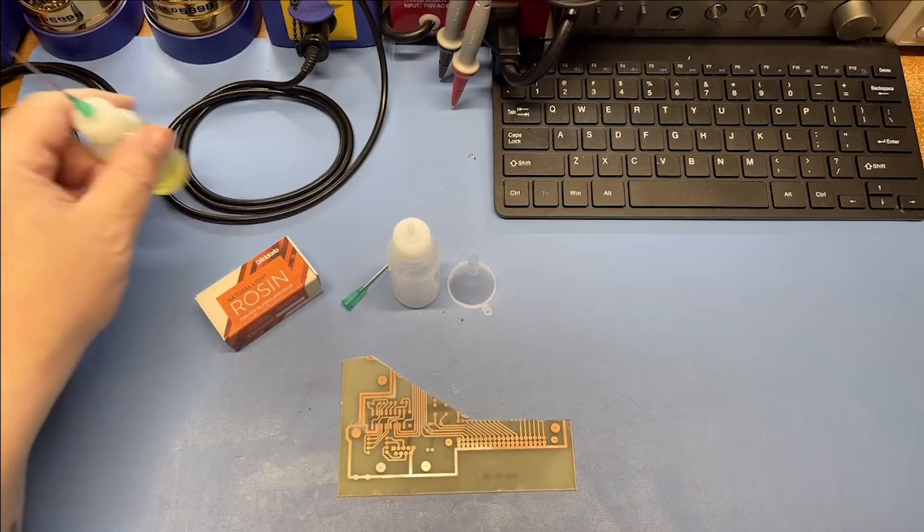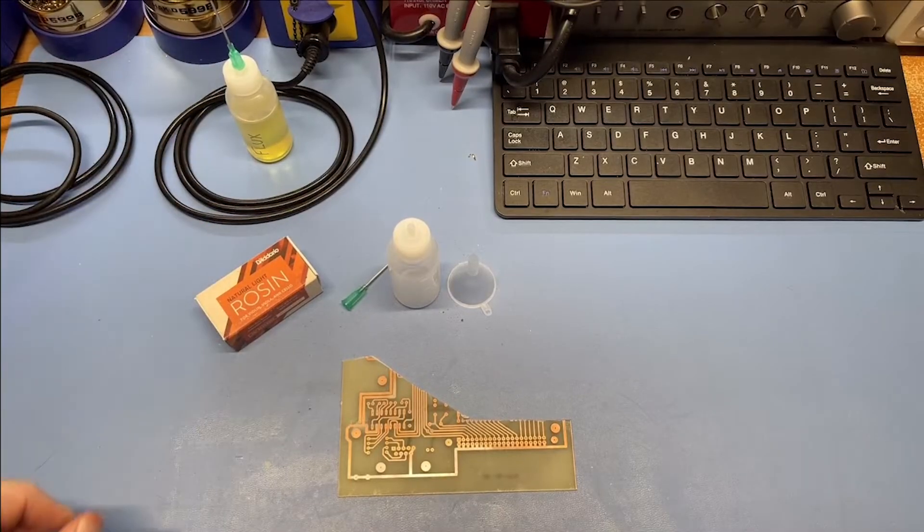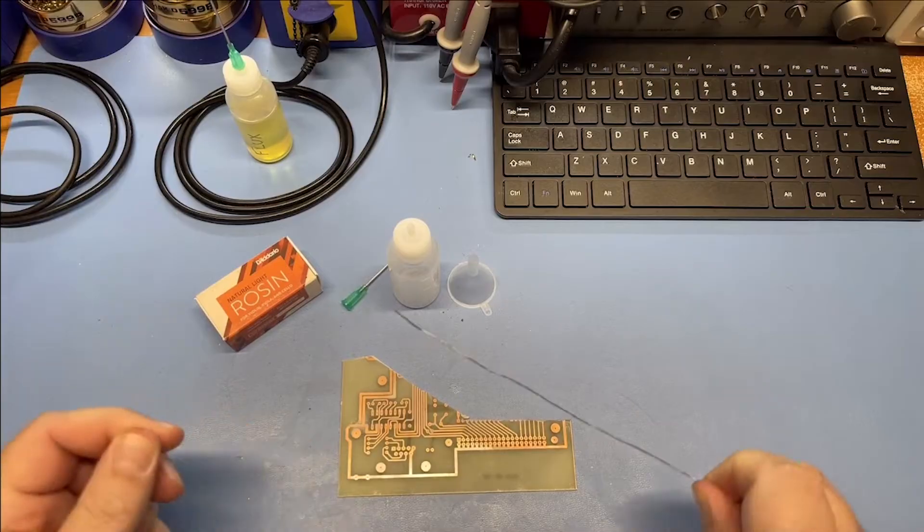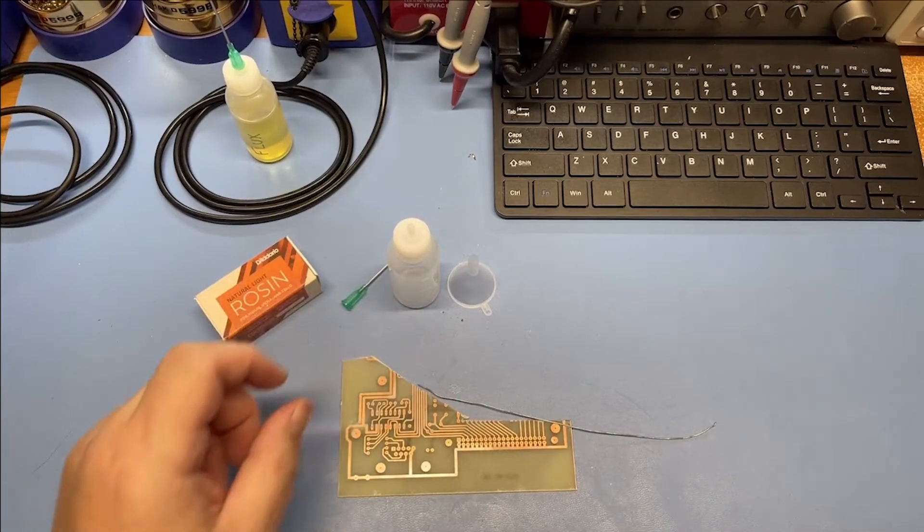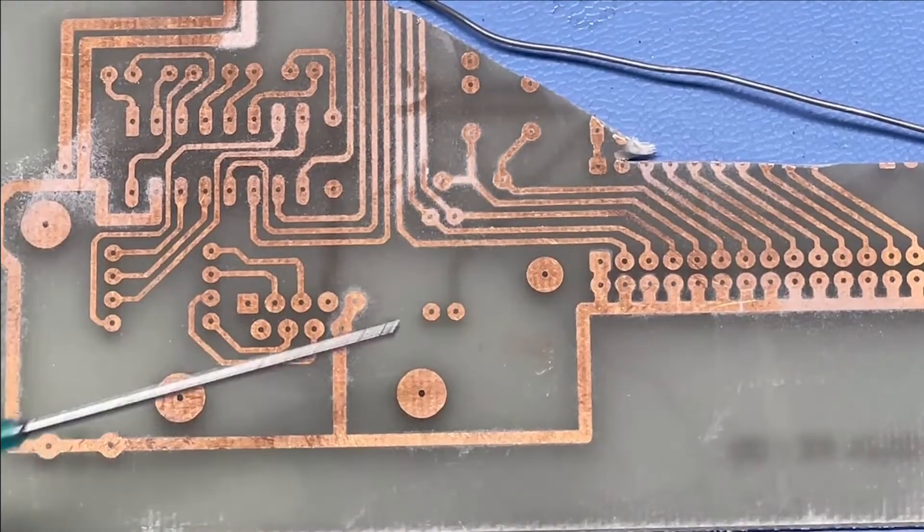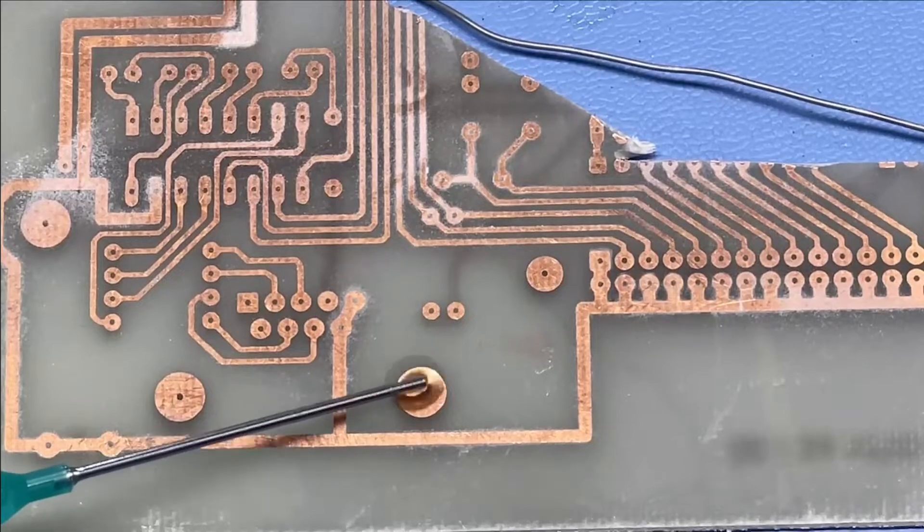I'll show you how it works here. Let me just get a little piece of solder. I'm just going to drop a solder ball on that and put a little bit of flux on that.